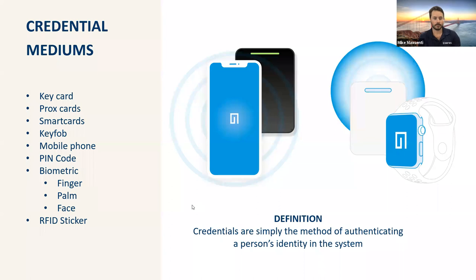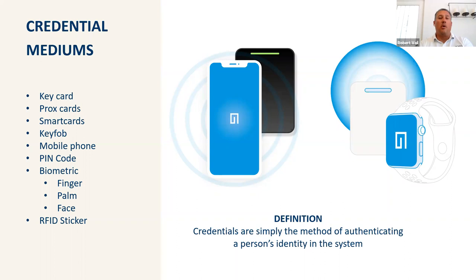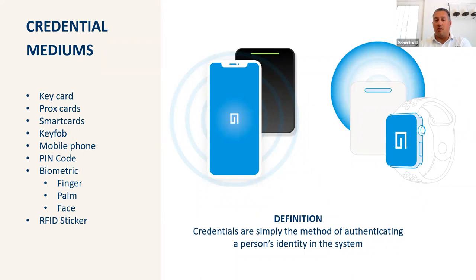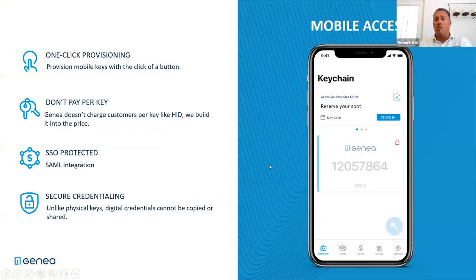Our system is built to support all these forms of credentials. Whether you have existing prox cards, fobs, or you want to use mobile - sometimes with mobile there's an upgrade requirement for the readers - we can support all forms of credentials with our system. It's a very flexible system, which is one of the huge benefits to our customers. On the topic of mobile, maybe Mike can talk about how we decided to build our app, what improvements we've made, and how we interact with HID Origo.